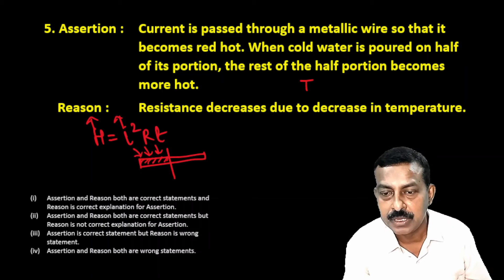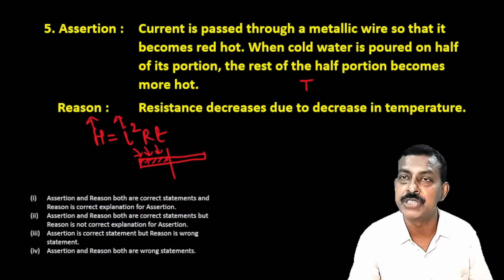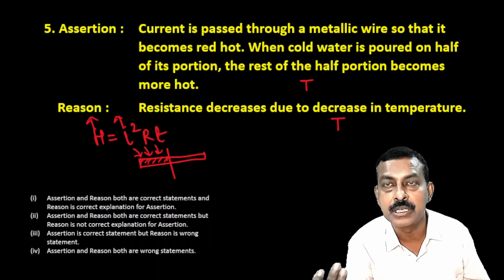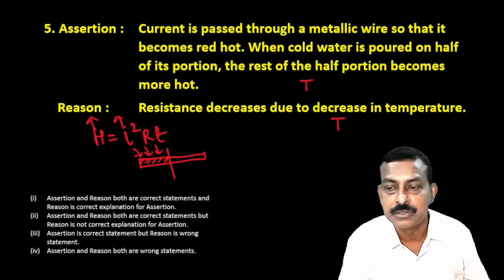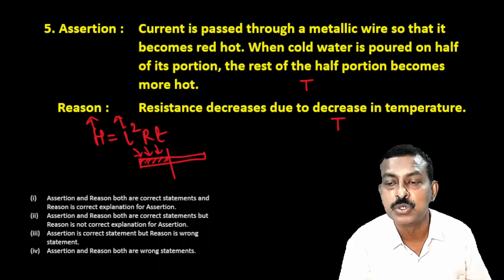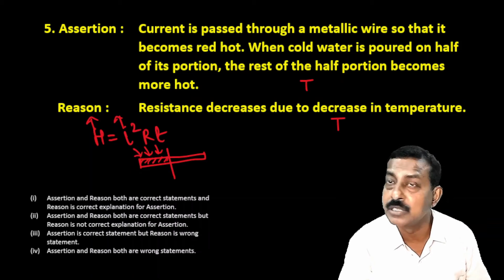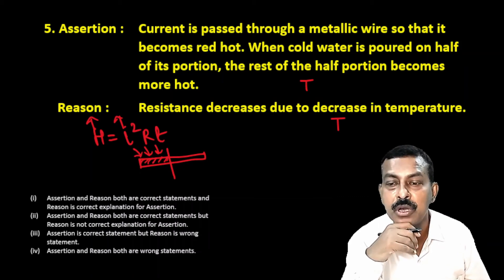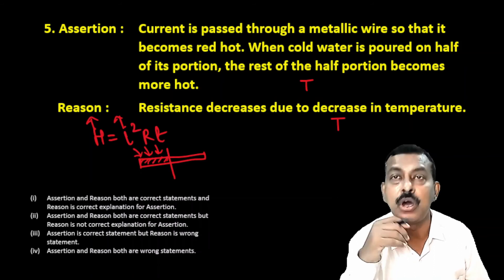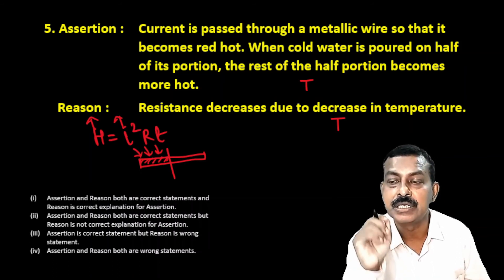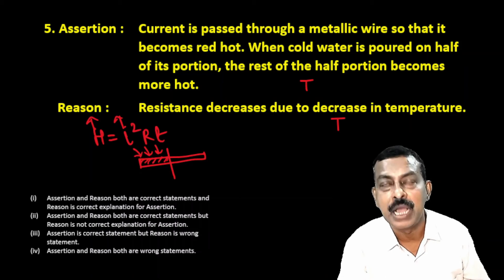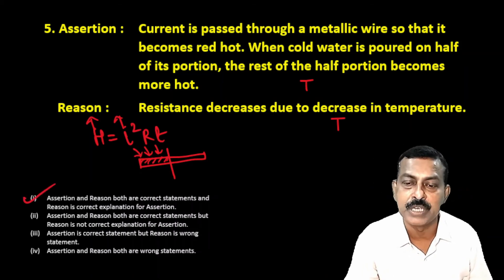The reason given is: resistance decreases due to decrease in temperature. This is a correct statement, especially in the context of a metallic wire. Since both assertion and reason are true, let's read them together: current is passed through a metallic wire making it red hot; when cold water is poured on half, the rest becomes more hot, because resistance decreases due to decrease in temperature. This correctly explains the assertion, so the first option is correct.